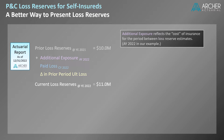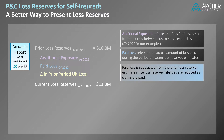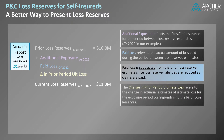The next item, paid loss, refers to the actual amount of loss paid during the period between loss reserve estimates. Paid loss is subtracted from the prior loss reserve estimate, since loss reserve liabilities are reduced as claims are paid. The last item, the change in prior period ultimate loss, refers to the change in actuarial estimates of ultimate loss for the exposure period corresponding to the prior loss reserves.